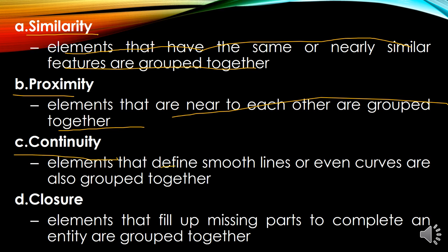Continuity: elements that define smooth lines or curves are grouped together. If there is a pattern, you group elements that will continue that pattern. For example, if you observe that the pattern in a certain group is male, female, male — then in the next group, you should also group it as male, female, male. So you continue the pattern because there is a smooth line.